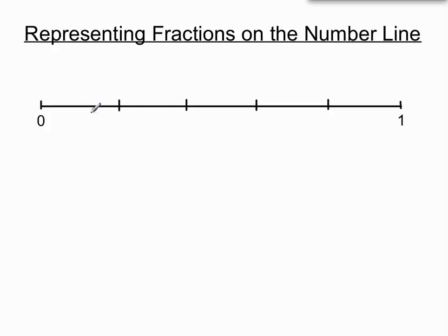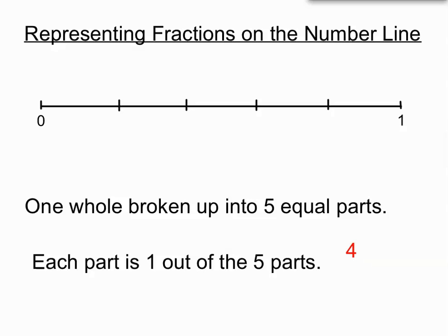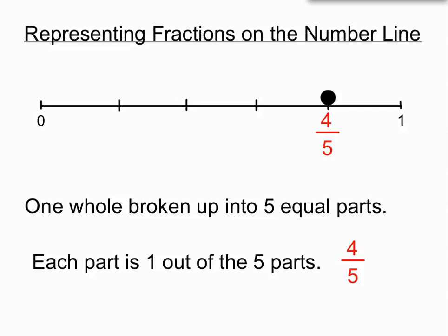This number line has five equal parts, so each part is one out of five. If we're going to represent four fifths, we position that fraction four fifths of the way across the line, where the arrow is pointing. As the green shaded box indicates, we've moved four of the five sections across — almost the whole way. We mark it with a big black blob. That's representing fractions on the number line and the basic terms for fractions. It's a good start to our video series on fractions.